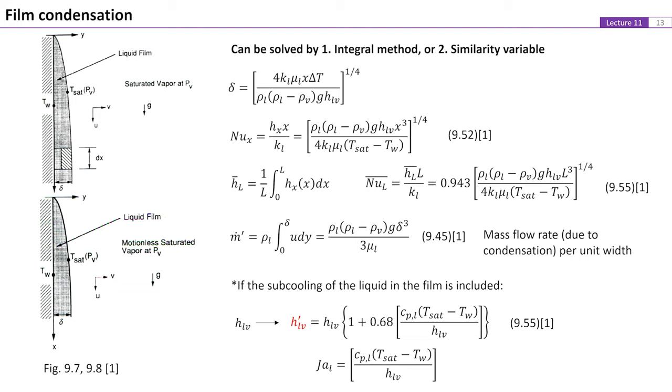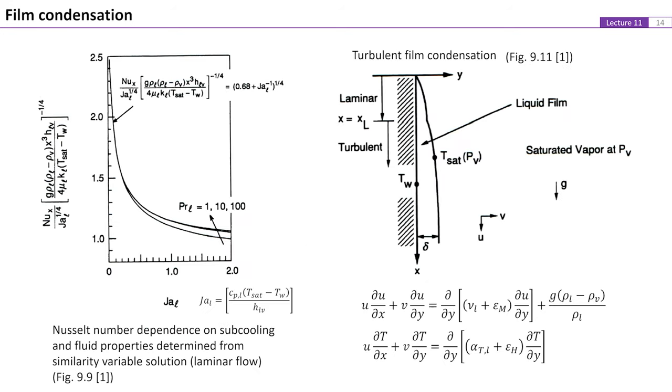The effect of subcooling and energy convection in the liquid film can be included by replacing the latent heat with this modified HLV prime as shown by equation 55. Figure 9 shows the Nusselt number dependence on subcooling and fluid properties determined from similarity variable solution. For large Reynolds number, the flow of the liquid film could become turbulent. For this condition, the governing equations for the conservation of mass, momentum, and energy balance can be revised by including the eddy diffusivities of momentum and heat. Solutions to this problem can be obtained by incorporating a postulated turbulent flow velocity profile for the film.